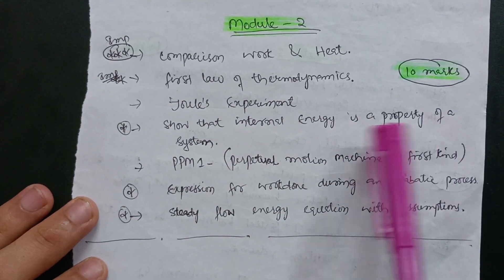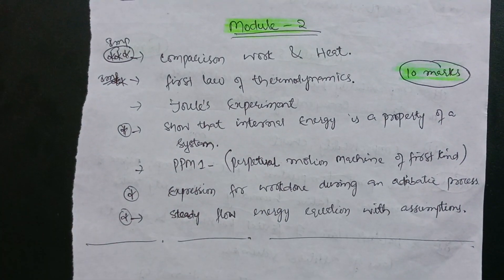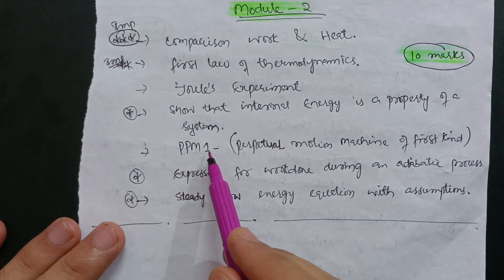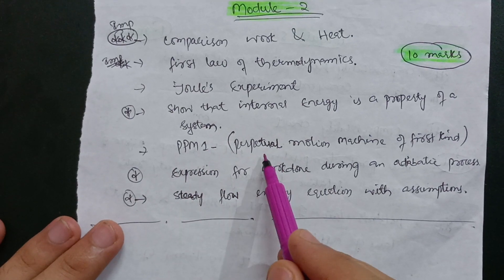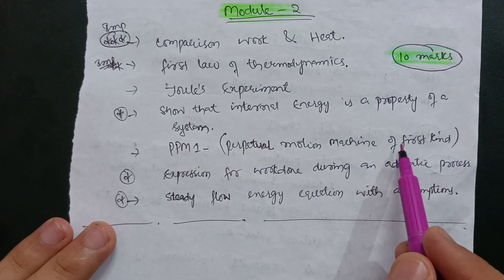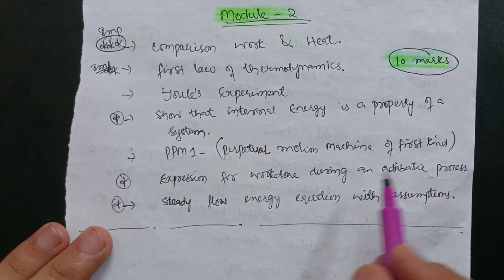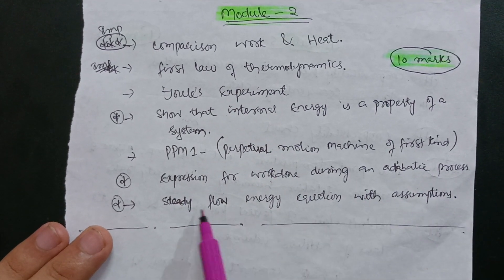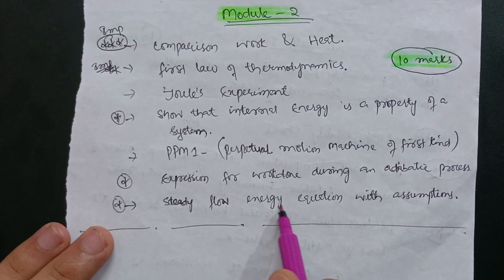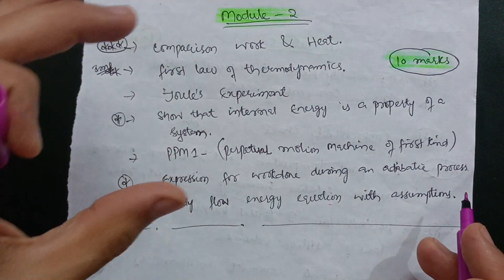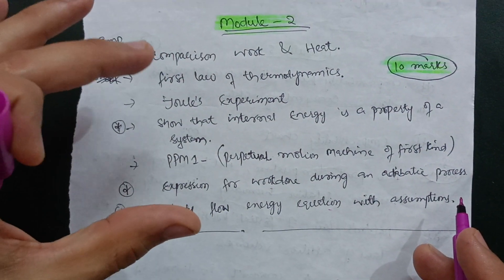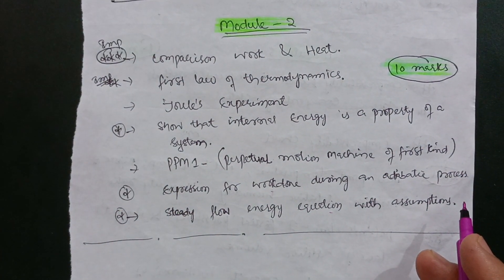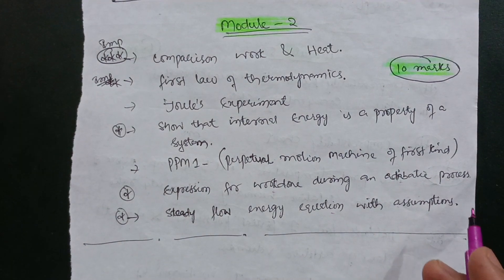Also show that internal energy is a property of a system — this is an important question. Then cover PPM1, that is the Perpetual Motion Machine of the first kind, expression for work done during an adiabatic process, and the Steady Flow Energy Equation with its assumptions. This is enough content for the second module.